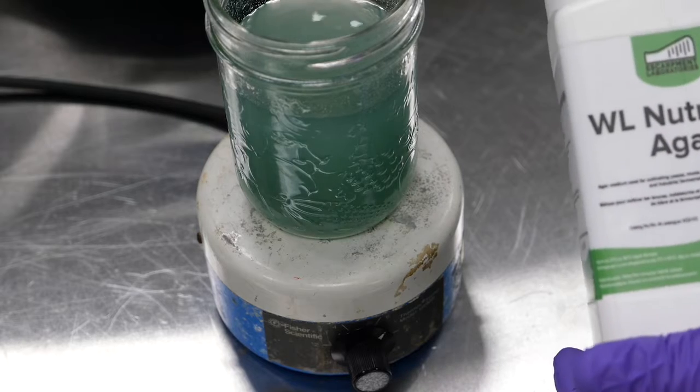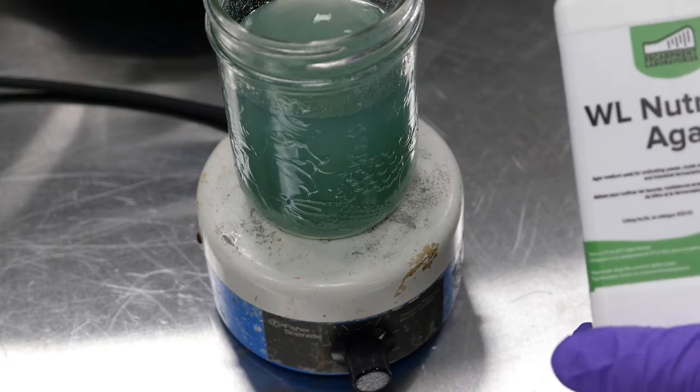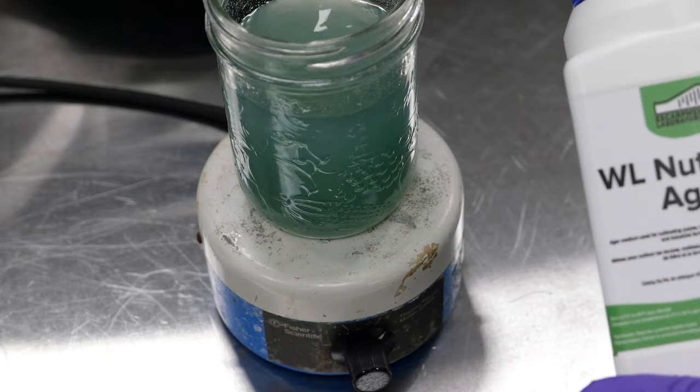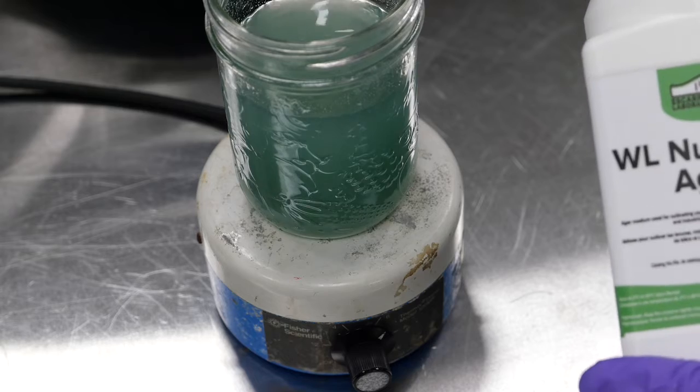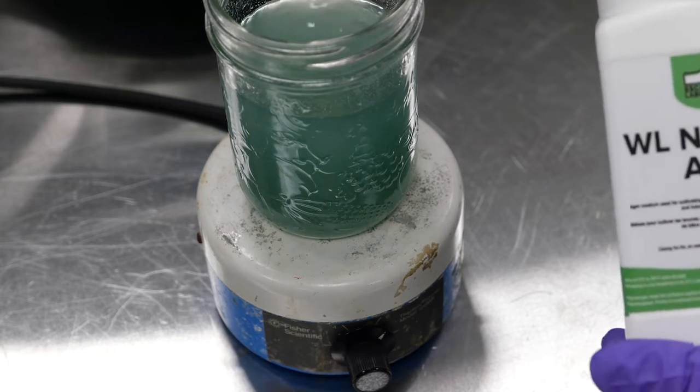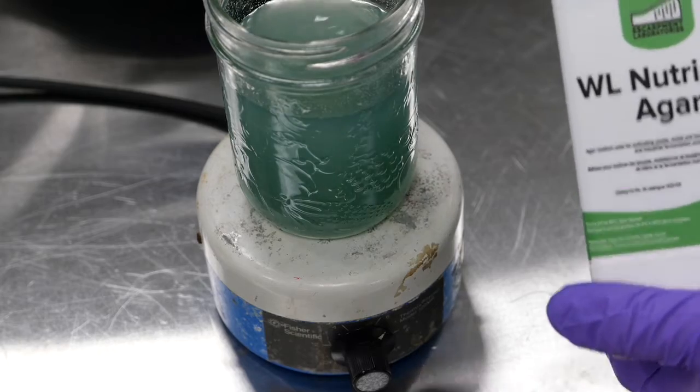The only case where you would add anything else to the WLN is if you're adding cyclohexamide, which turns it into WLD. It stops regular yeast from growing, but it helps to select for yeasts like Brettanomyces. If you're checking your barrel aged beers for Brettanomyces contaminations, that's a great option for you.